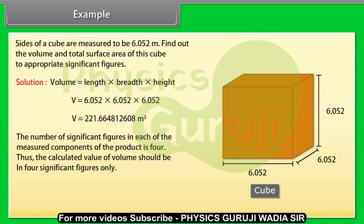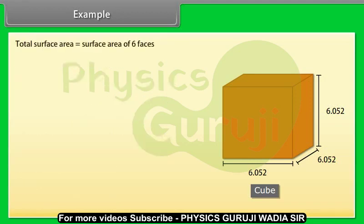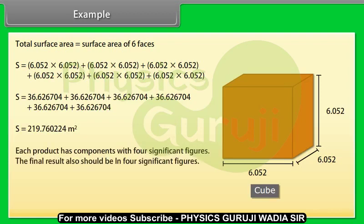Total surface area is equal to surface area of 6 faces. After calculation we get S equals 219.76 meter square. Each product has components with 4 significant figures. The final result also should be in 4 significant figures. Thus S equals 219.8 meter square.